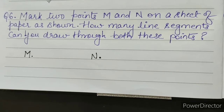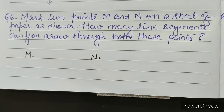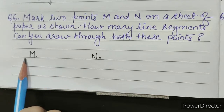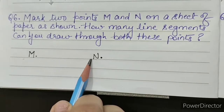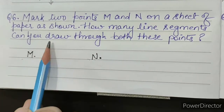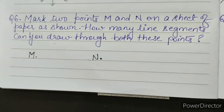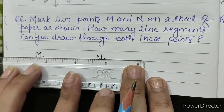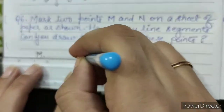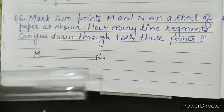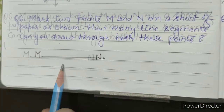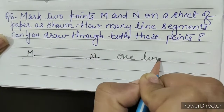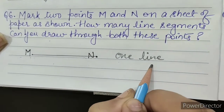Question number 6: mark 2 points M and N on a sheet of paper. How many line segments can you draw through both these points? This is point M and this is point N. How many lines can we draw with the help of these two points? We can draw only one line. So our answer is one line.